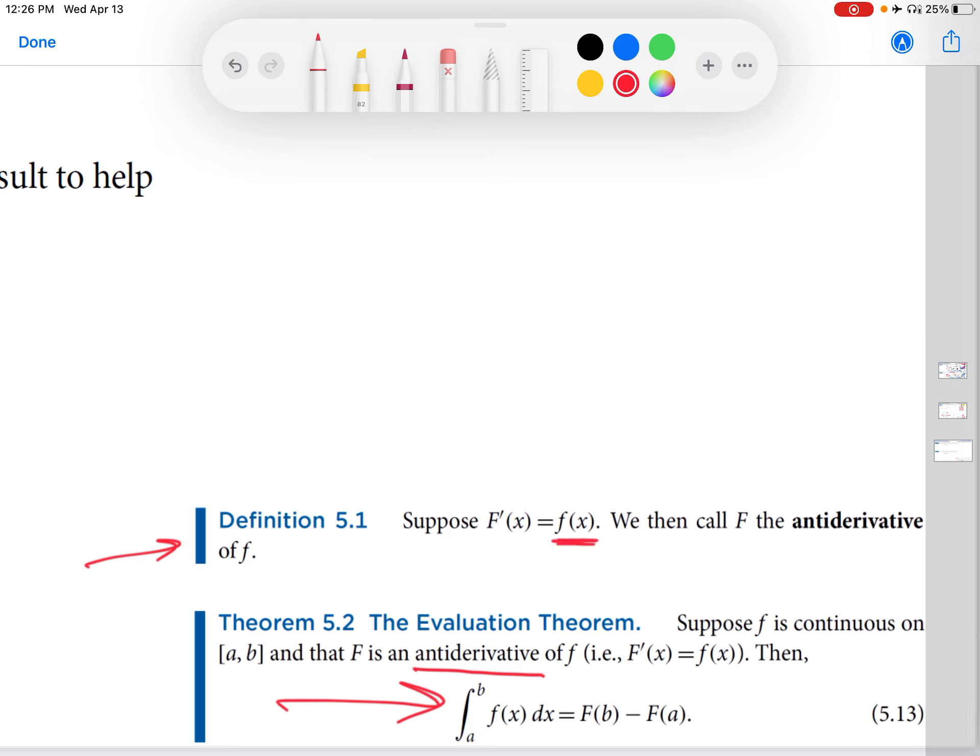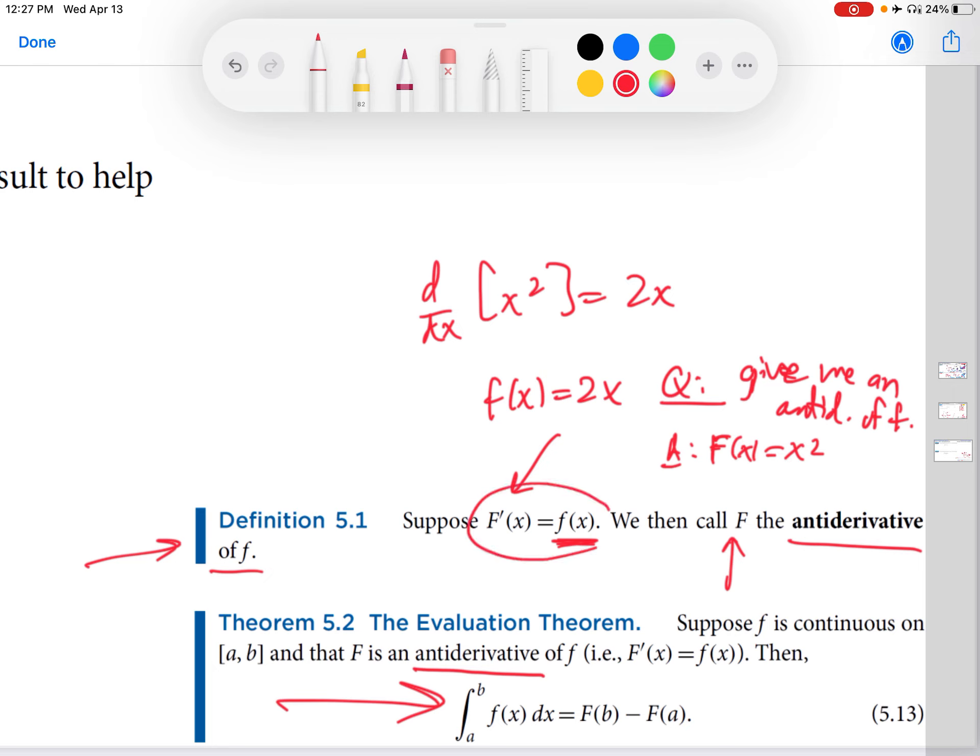Suppose I have a function little f. We call another function, capital F, the antiderivative of little f if it differentiates to that function. For example, we know that the derivative of x² is 2x. That's the power rule. So if I started with a function little f(x) = 2x, and I pose the question to you, give me an antiderivative of f, one answer you might say is capital F(x) = x². Why? Because let's check the condition. The derivative of x² is 2x, which equals the little f(x) that I gave you.